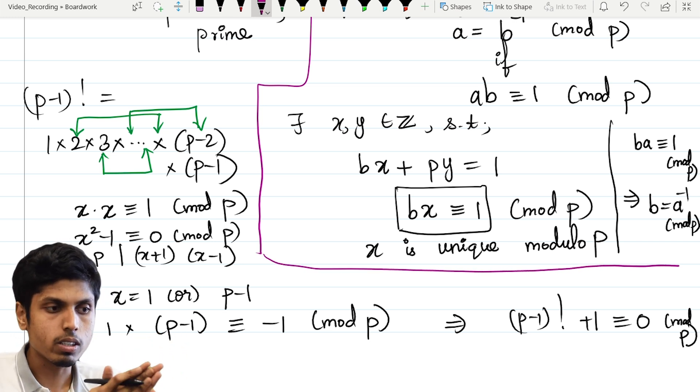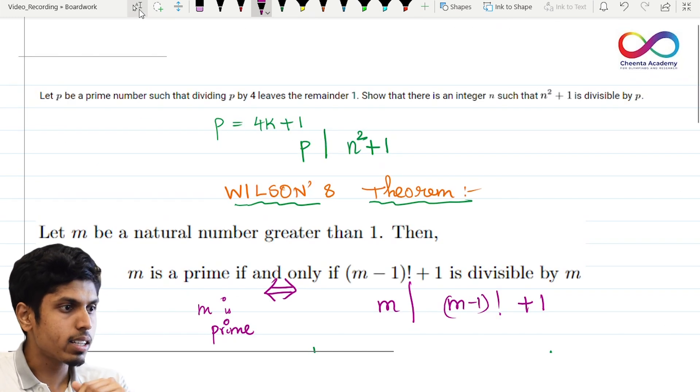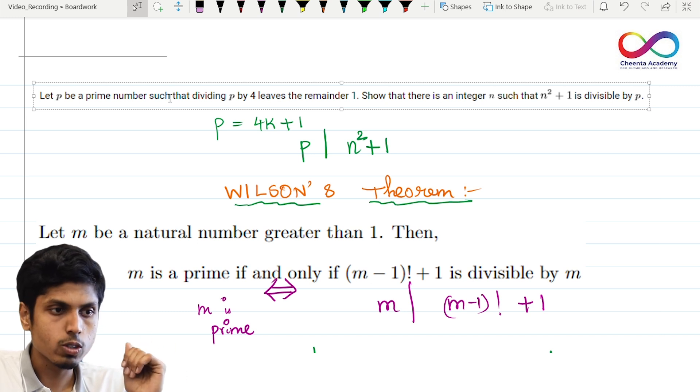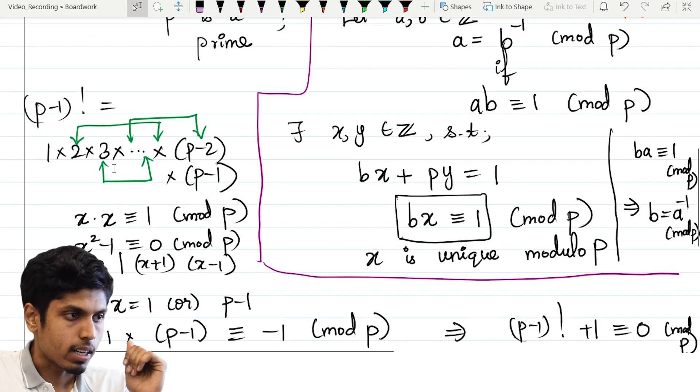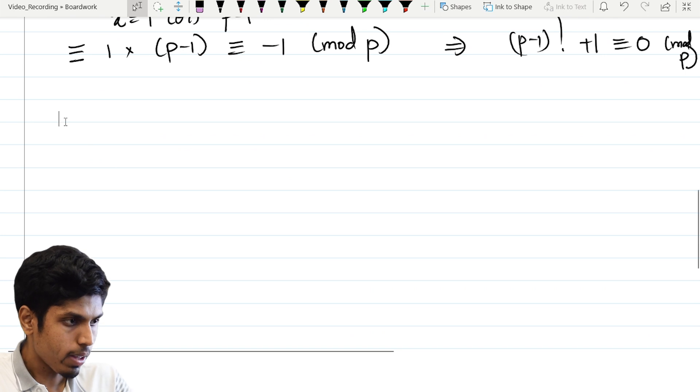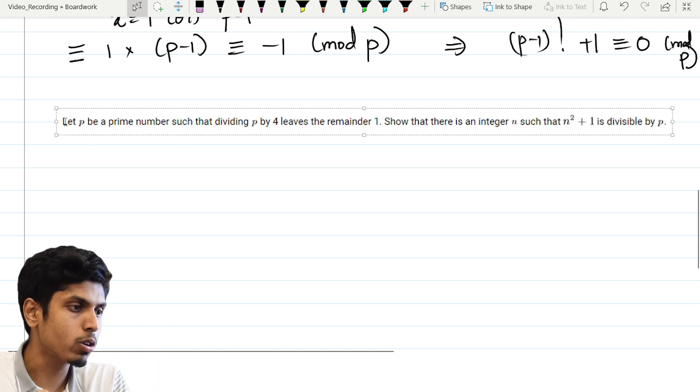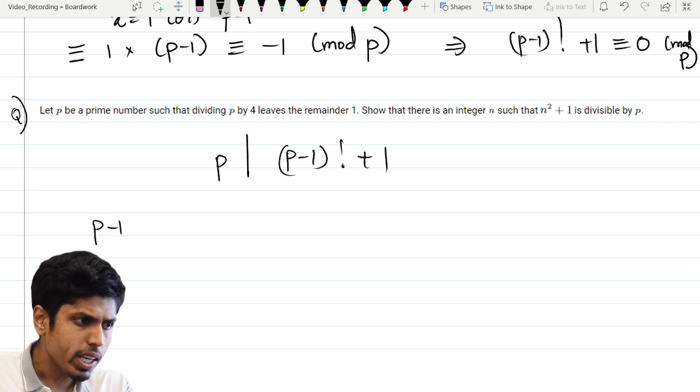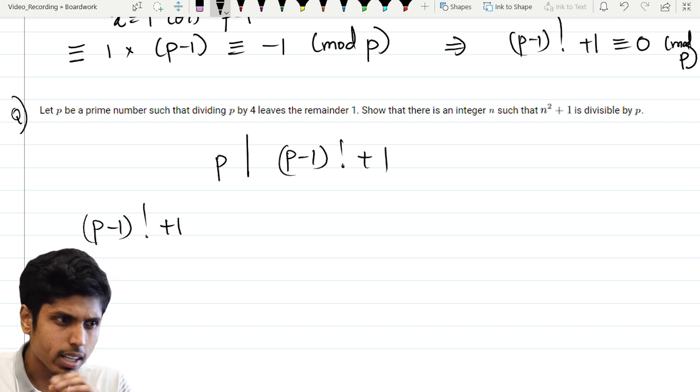So I request viewers to go back and read about Bezout's Lemma if you are not aware of. Let's go back to the problem once. It says to prove the existence of an integer such that n square plus 1 is divisible by p. And since we know that p is a prime, I can now use the forward statement of Wilson's theorem. That is, p divides p minus 1 factorial plus 1. But let me tweak the p minus 1 factorial a little bit.